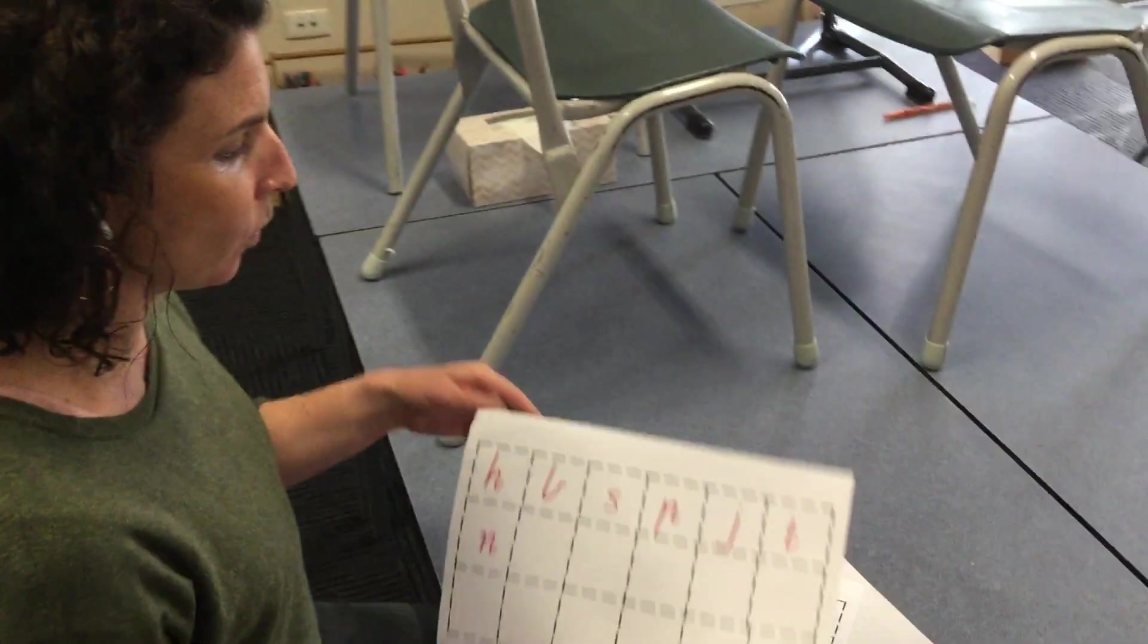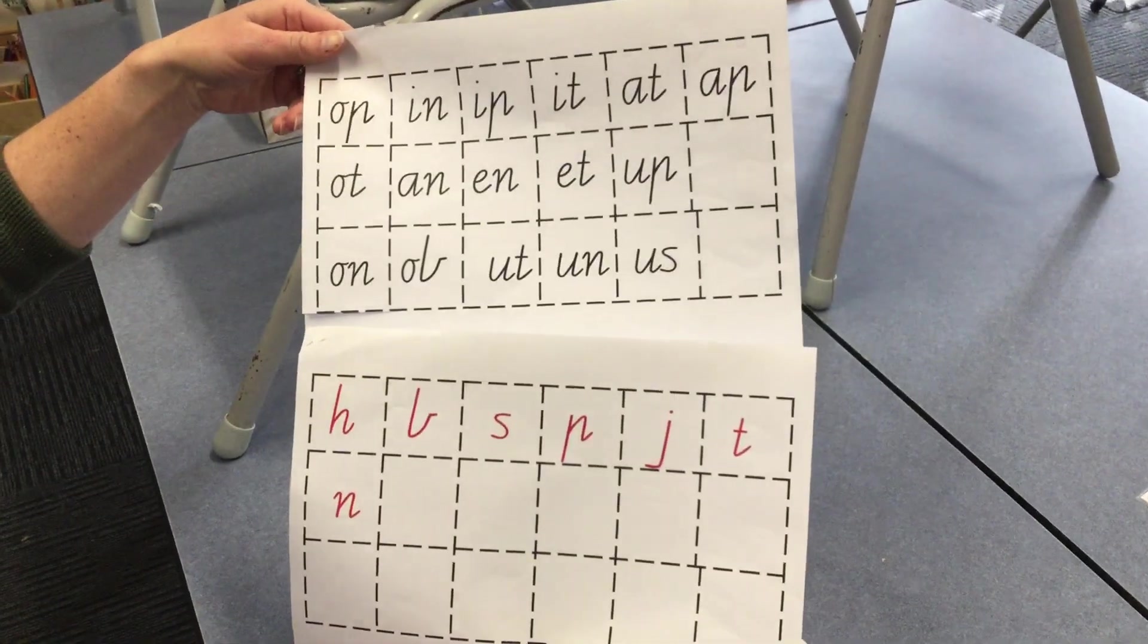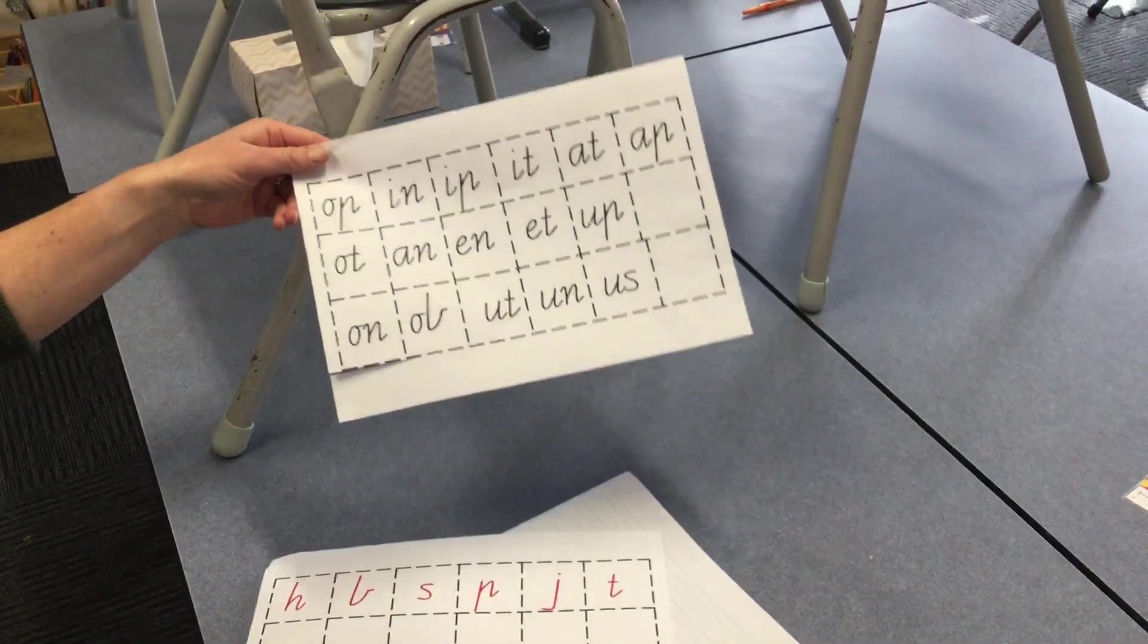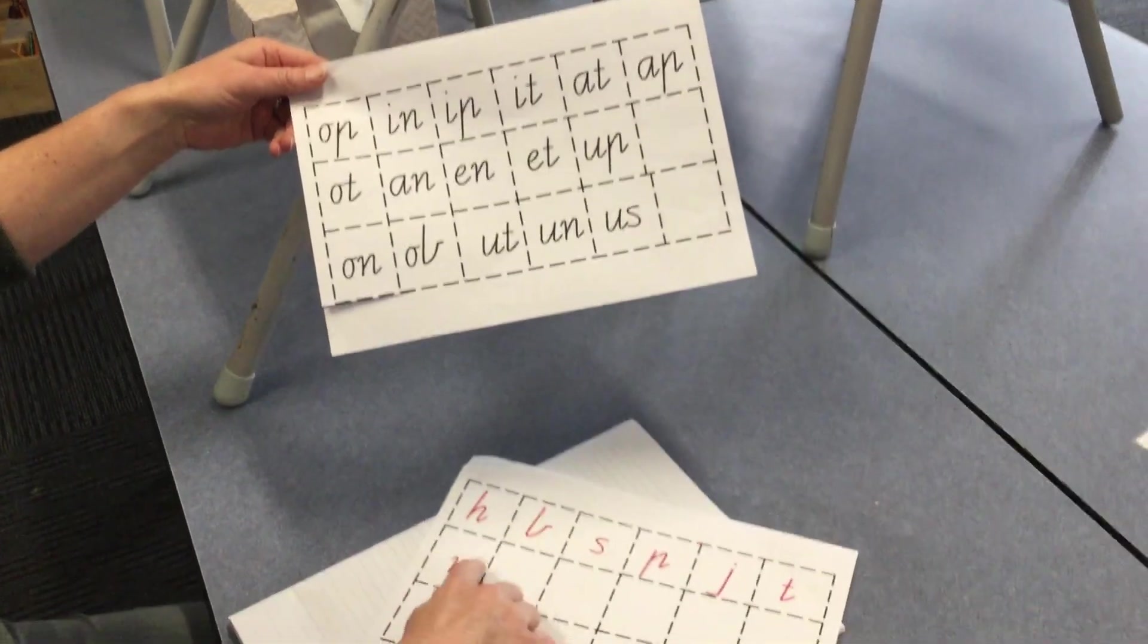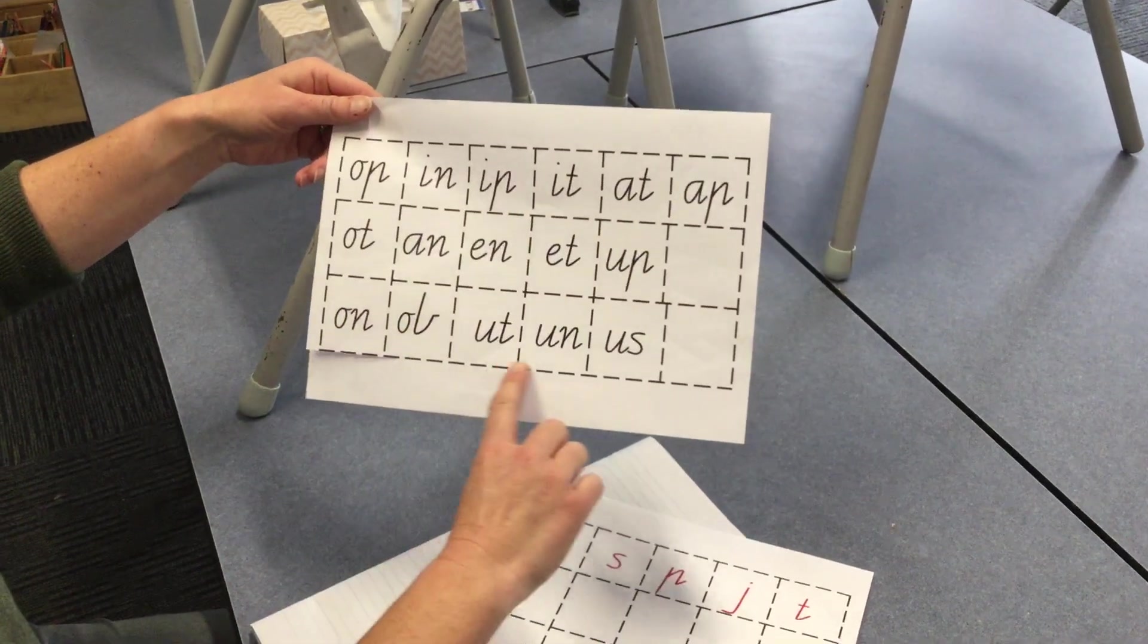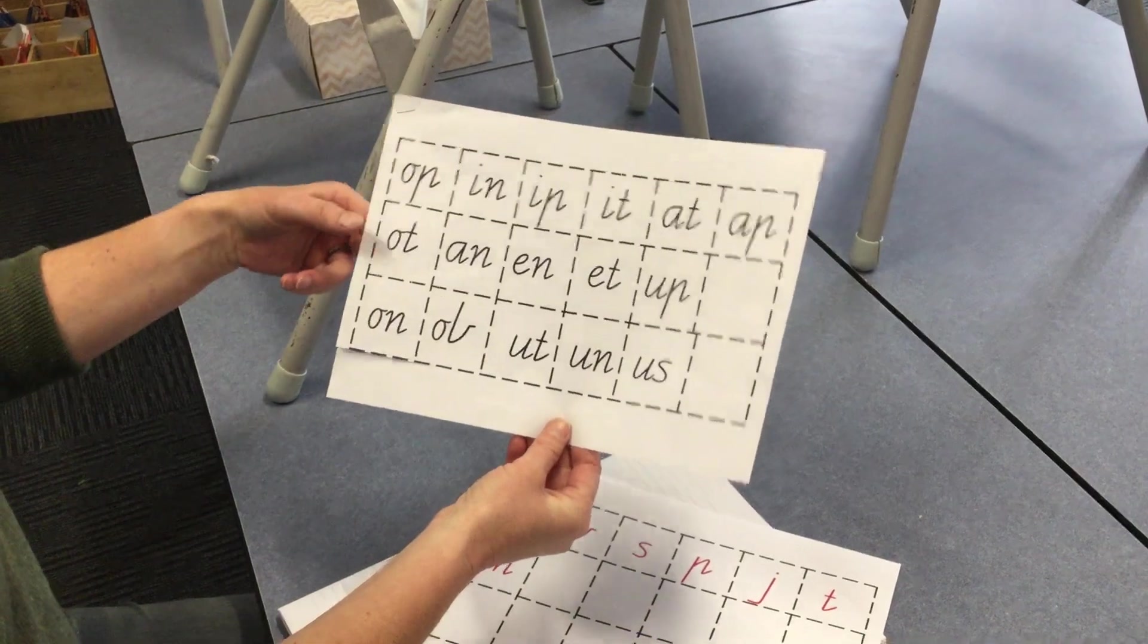What you've got now is these two pages in your special pack. These are your starting sounds in red, and here are your word families that will go at the ends of the words.